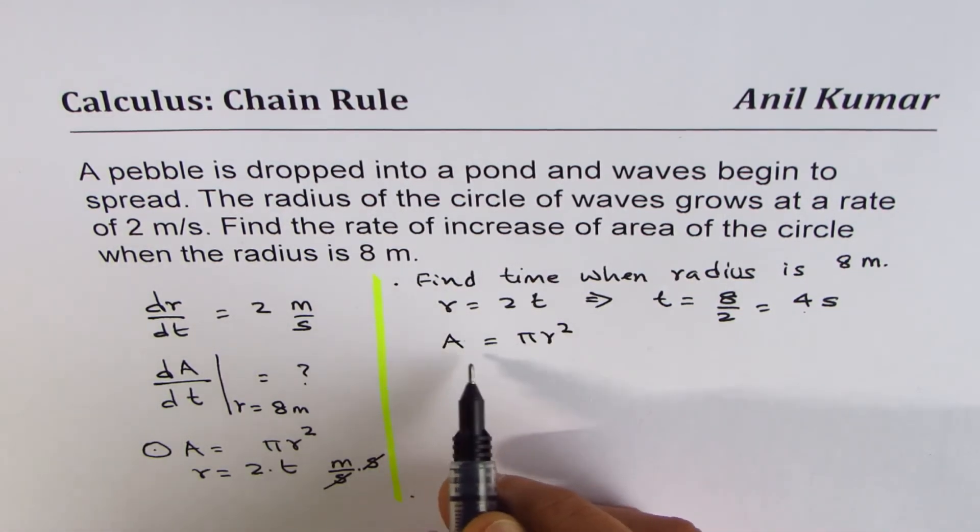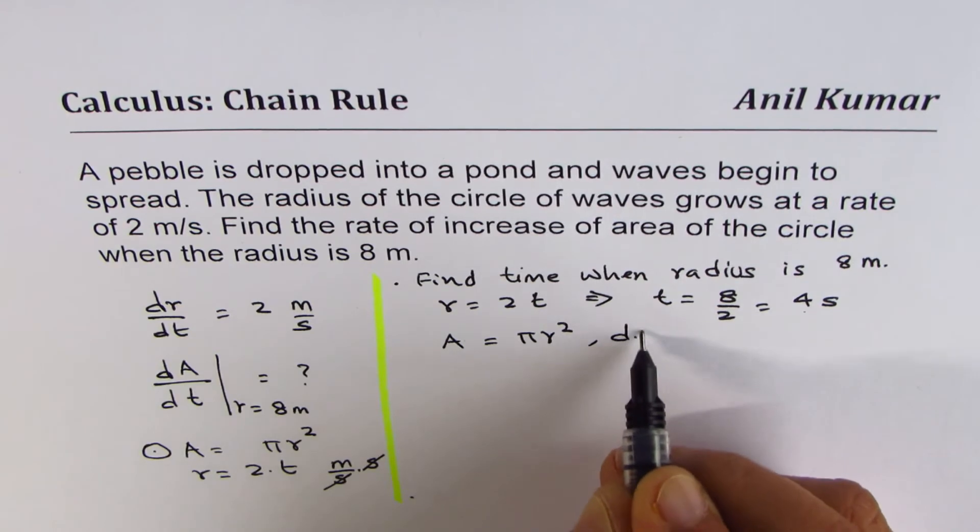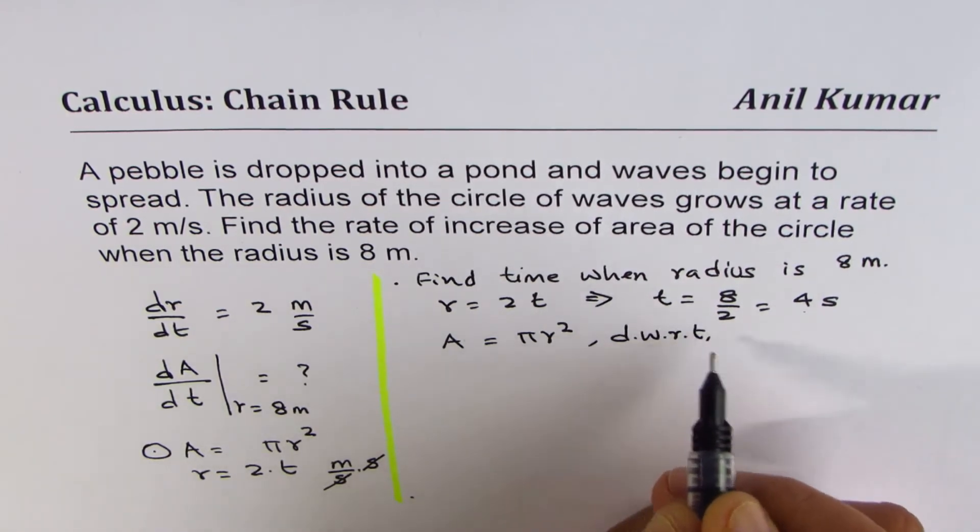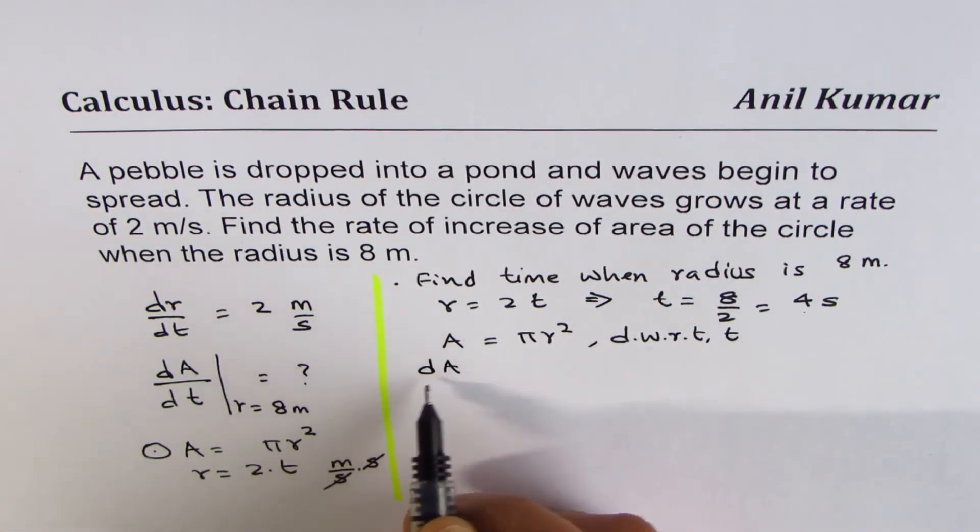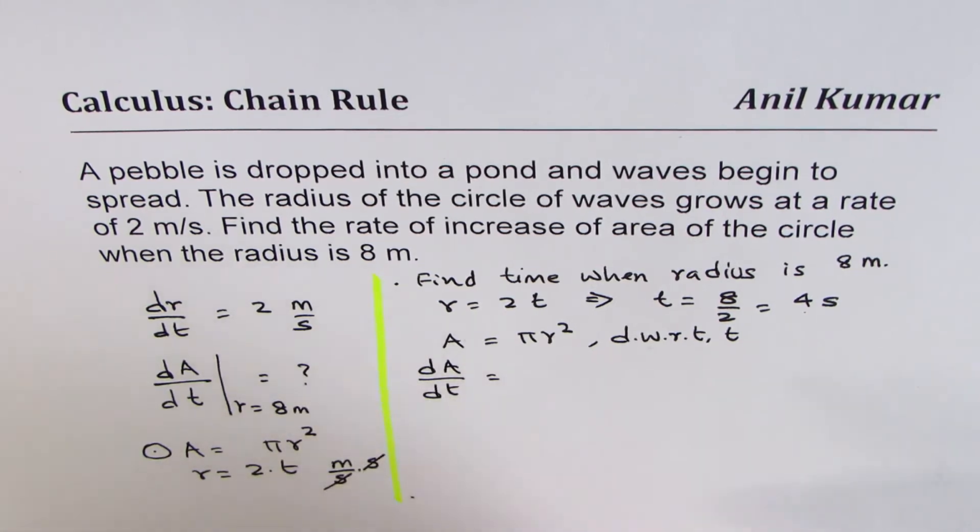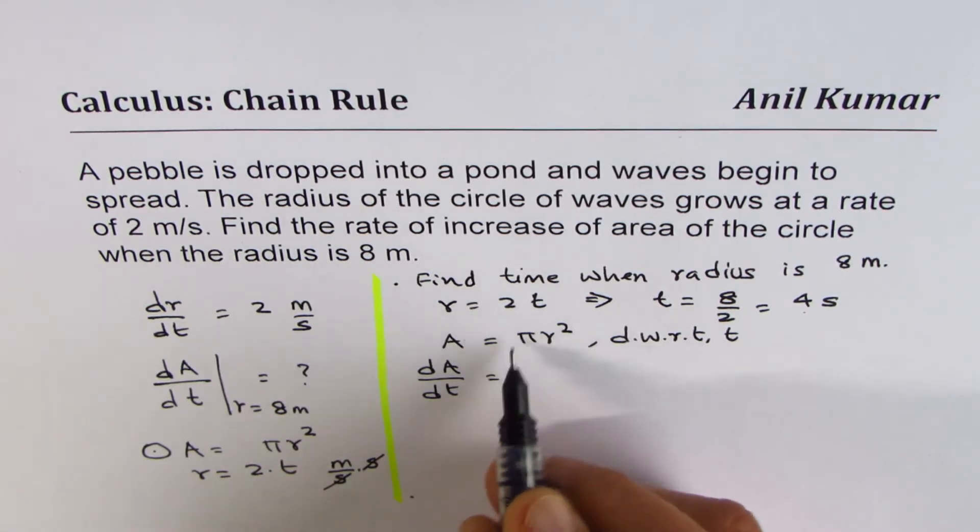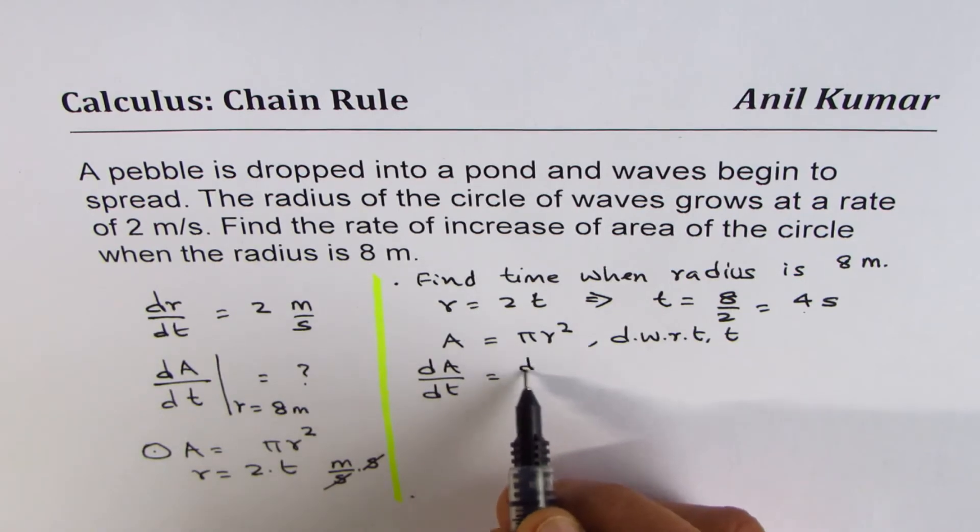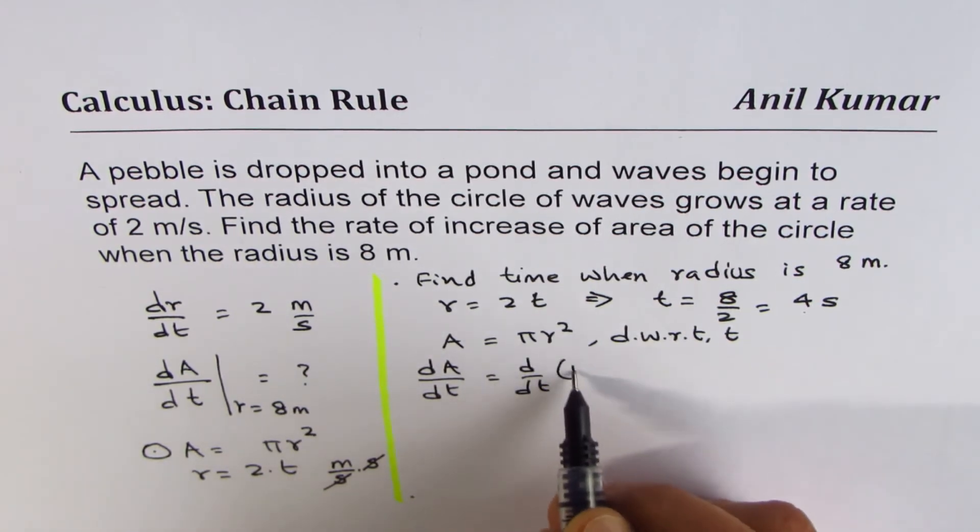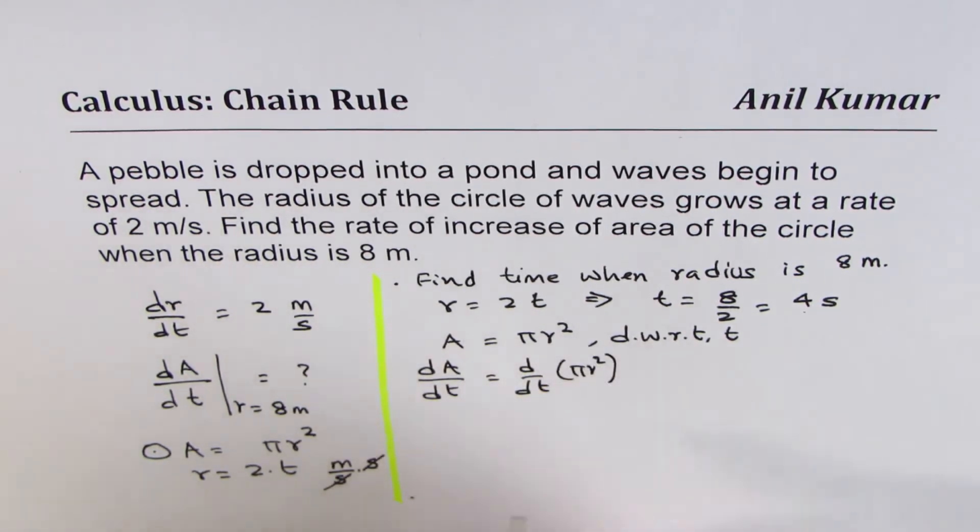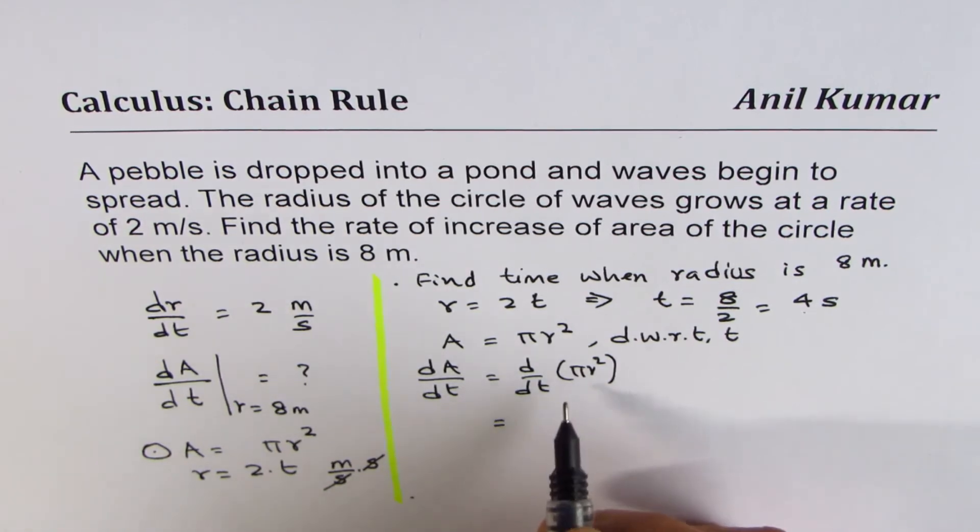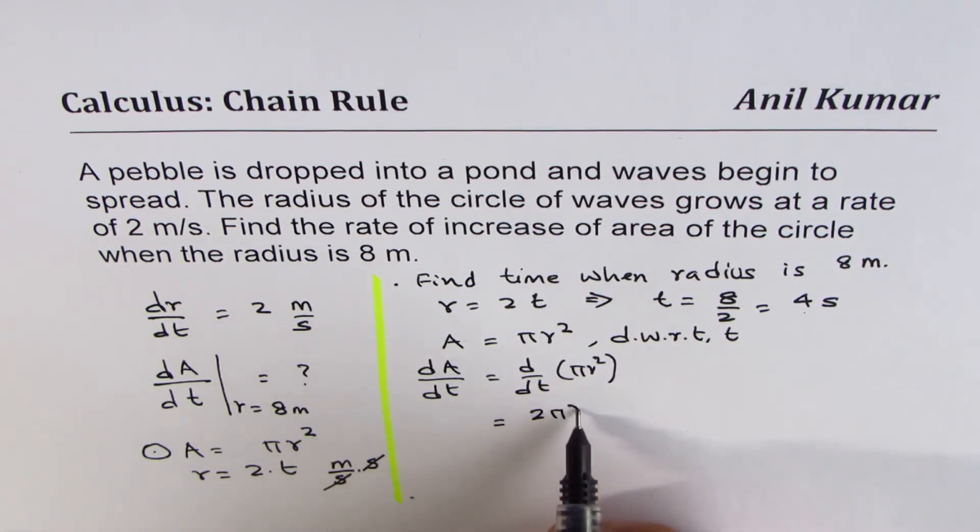Differentiating with respect to time. So we will differentiate with respect to time. So we get dA/dt equals to derivative of pi r squared, d/dt. Pi r squared. So that is 2 pi r times dr/dt.